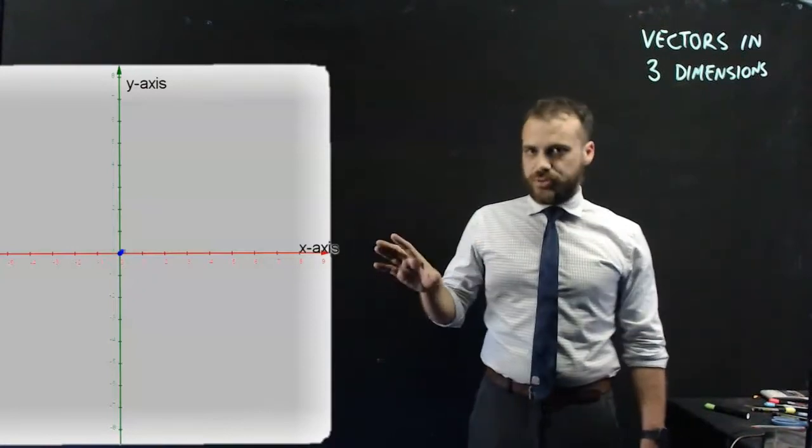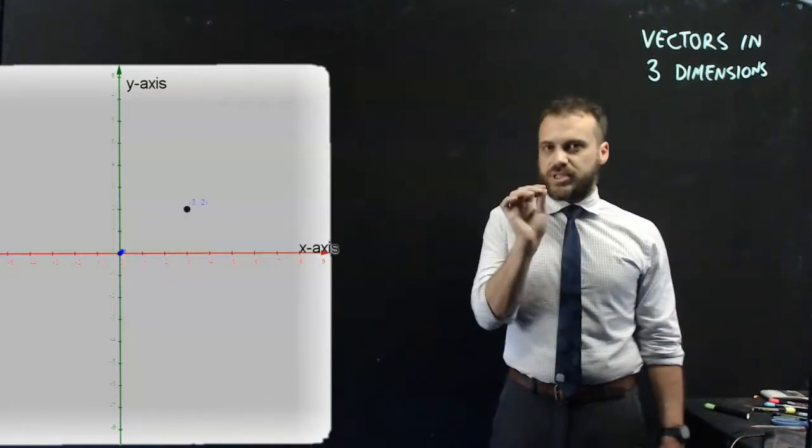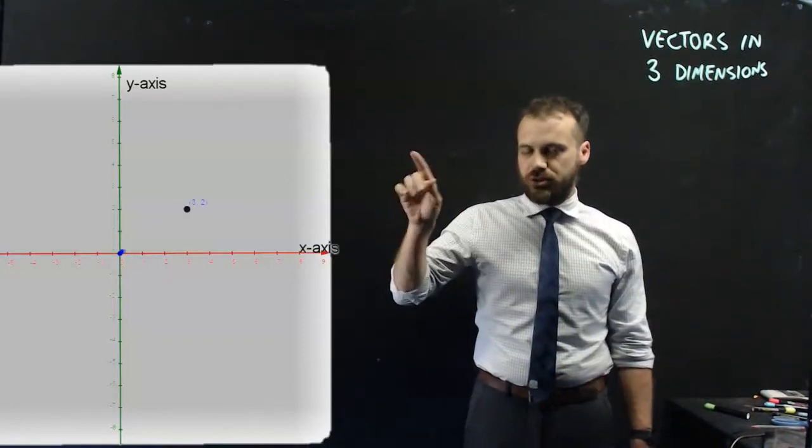So you know your Cartesian plane, x-axis, y-axis. We can put a point on there, say point 3,2. We can put a position vector on there from the origin to the point 3,2.